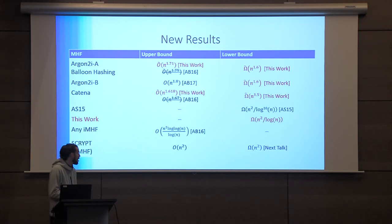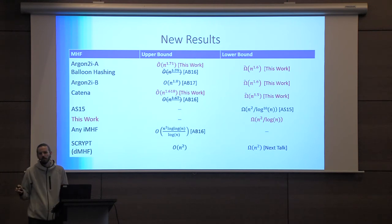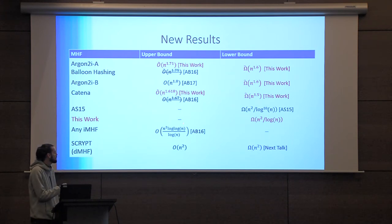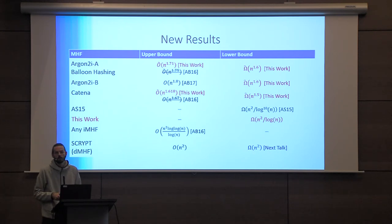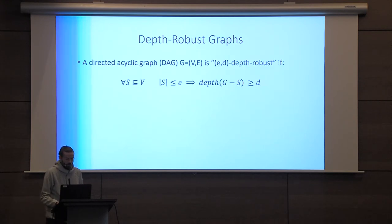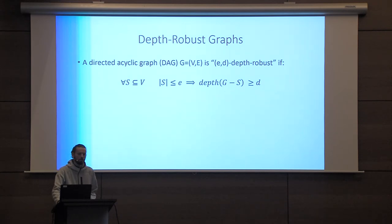The reason we say 'as high as you could hope for' is because of a result showing that for any graph on n nodes, you can't get n² — the most you can get is effectively n²/log n. In this work we construct a graph achieving n²/log n. The way we do that is by analyzing a combinatorial property of graphs called depth robustness.